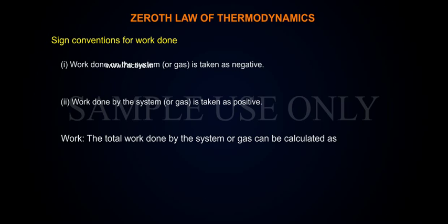The total work done by the system or gas can be calculated as integration of dW is equal to W is equal to integration of P dV from V1 to V2.